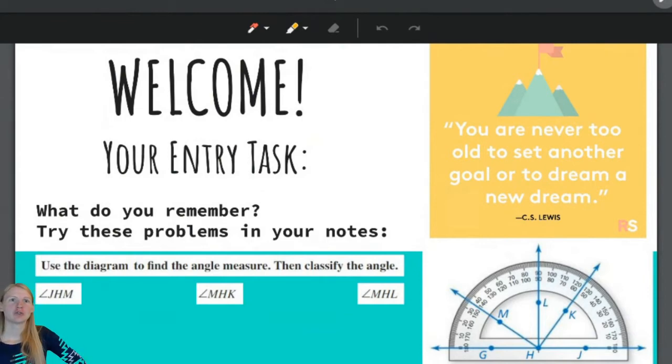We are told to use the diagram to find the angle measure. We are given three angles here we are trying to find the measure of, and then we want to classify the angles. So acute, obtuse, right, straight, what are they?